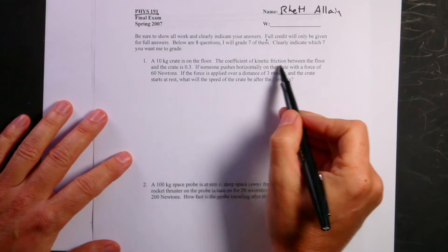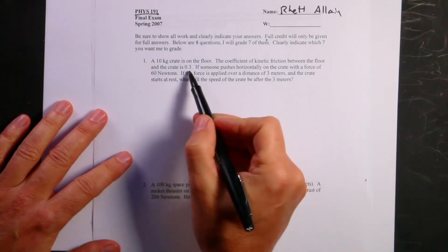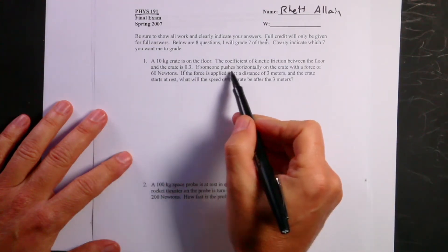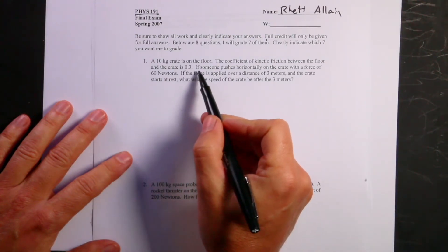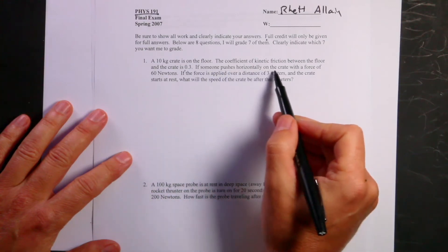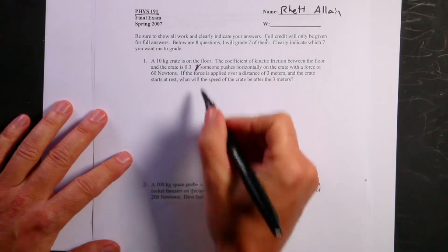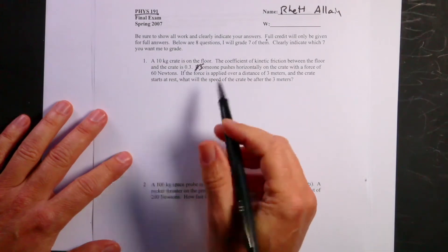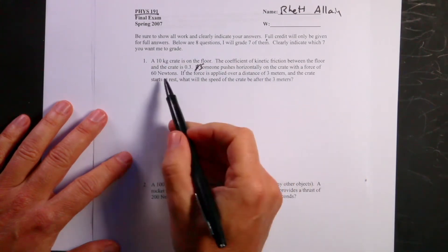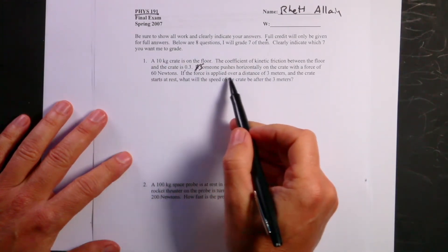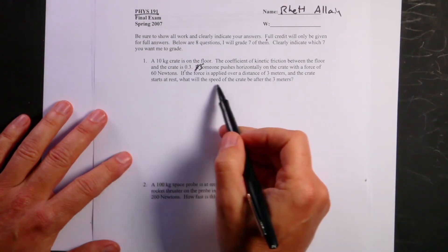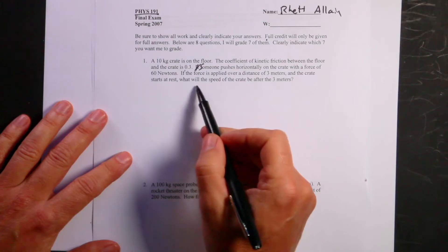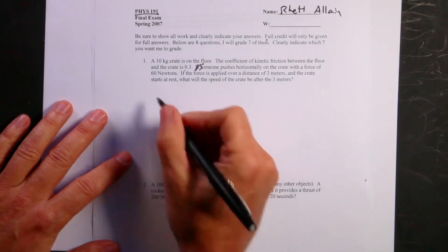Let's jump to it though. A 10 kilogram crate is on the floor. The coefficient of kinetic friction between the floor and the crate is 0.3. Someone pushes on a crate horizontally with a force of 60 Newtons. If the force is applied over a distance of 3 meters and the crate starts at rest, what will the speed of the crate be after the 3 meters?